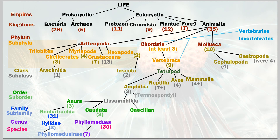Look how far we've had to go to get to the species level. Many creatures end here. Phyllomedusa has 30 different species. The next level can be subspecies, but this particular one ends at species — though some creatures like tigers have subspecies such as Bengal and Siberian, which can differ significantly in pattern and color.